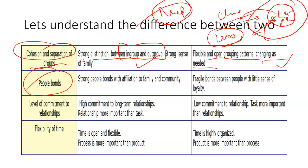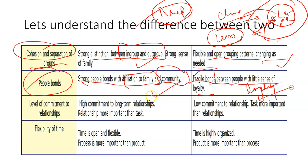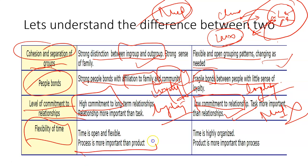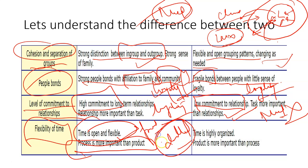Regarding people bond, in high context cultures the family and community are given a lot of value, whereas in low context cultures the bonds are fragile and people have less sense of loyalty. For example, in India people are very loyal to their families, but in the US loyalty is a big issue. The level of commitment in relationships is also high in high context and low in low context — people connect based on needs and then disperse. Finally, flexibility of timing: in high context cultures the process is more important than the product, timing is flexible, and people don't follow strict deadlines. In low context cultures, deadlines are highly organized and the product is more important than the process.